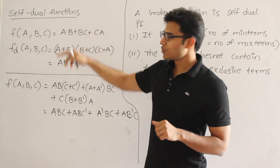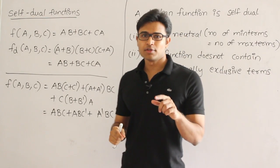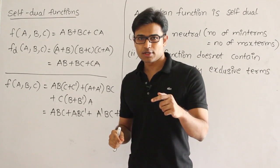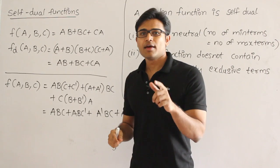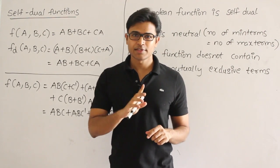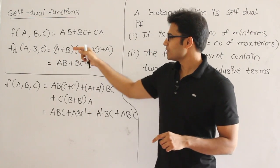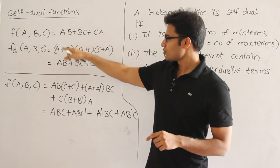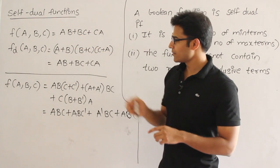And now find out the dual of it. I hope that you remember what dual is. Changing plus to dot and dot to plus, and then changing 0 to 1 and 1 to 0. But then leave out the variables as it is. So leave out A, B, C as it is, just change it. Now change this dot to plus, plus to dot like that.